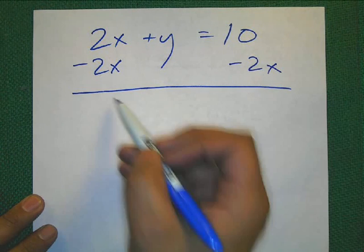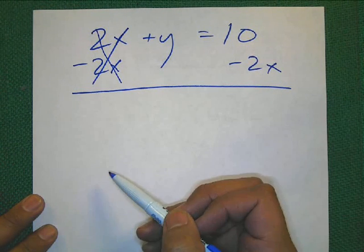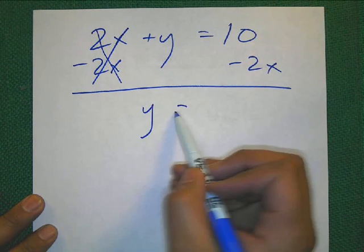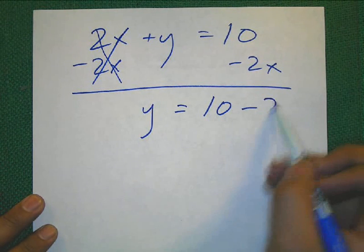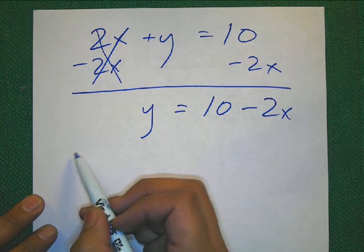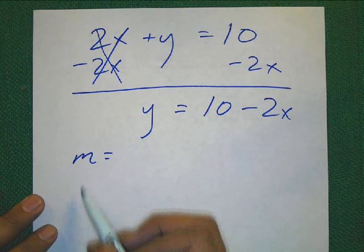However, if I do it to one side, I need to... That's right. Do it to the other. Those are canceled out. I'm now left with y equals 10 minus 2x.